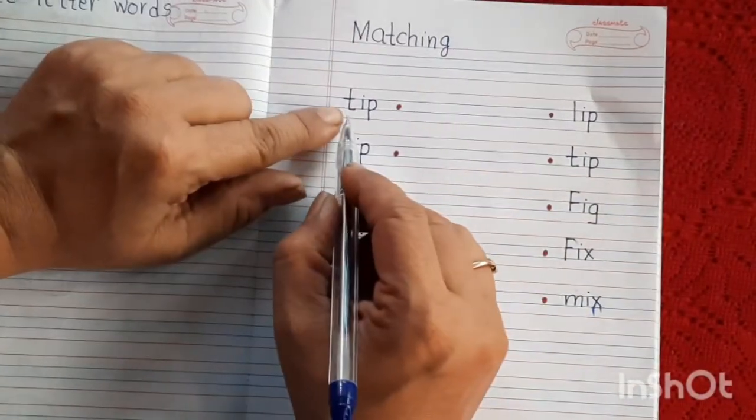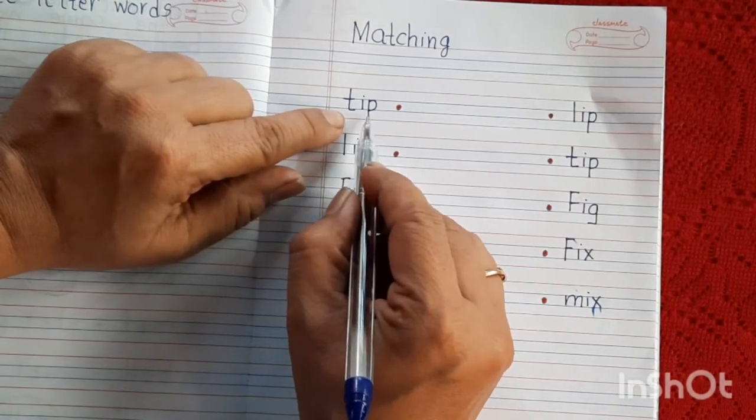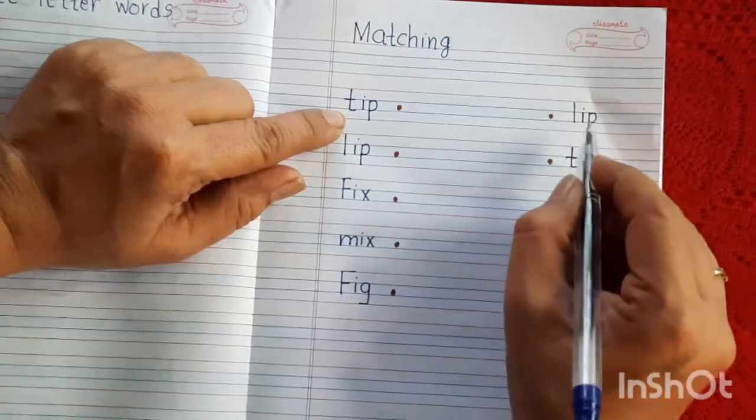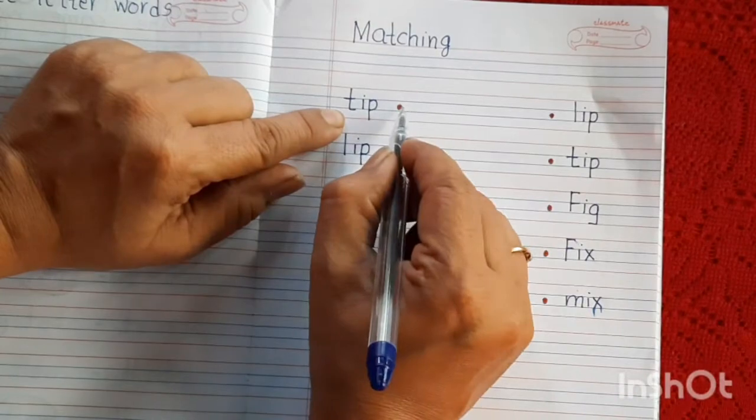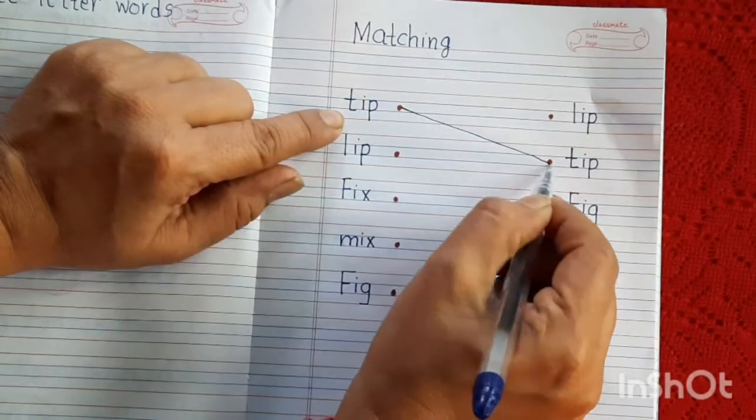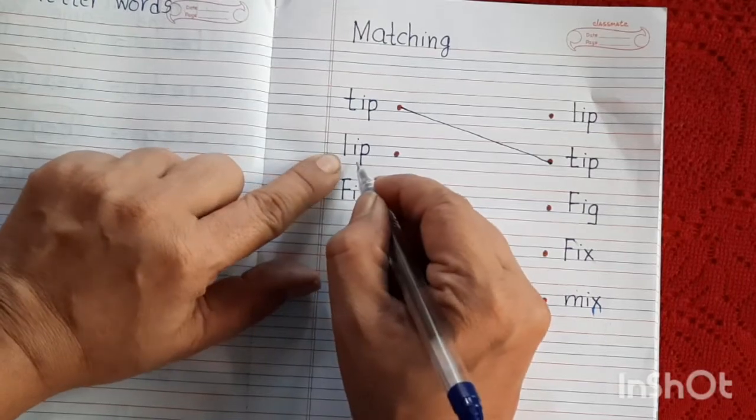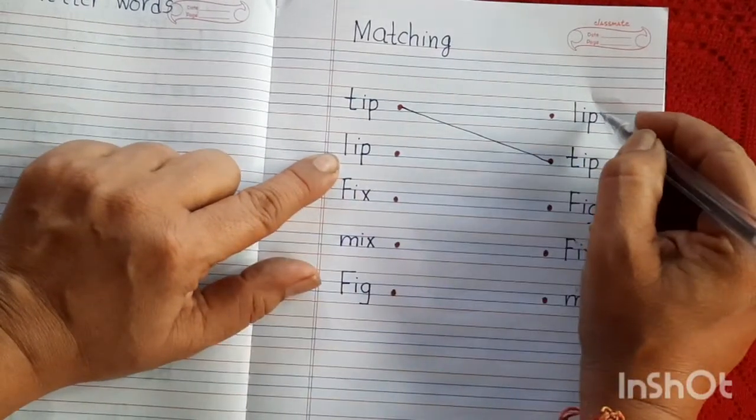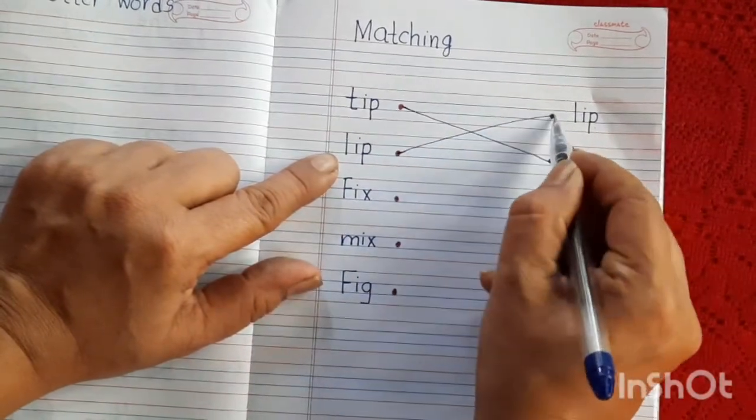Let's start. First word is T-I-P, tip, T-I-P, tip. Where is T-I-P, tip? Is it no, is it yes, so let's match it. Next word is L-I-P, lip. Where is lip from this side? First one is lip, so let's match it.